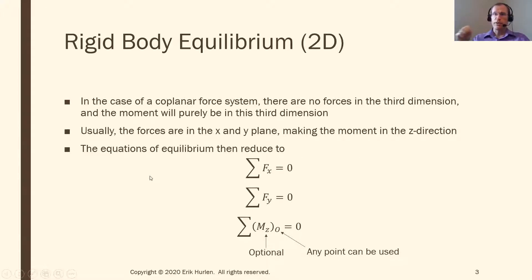Today we're going to stay in two dimensions, just the XY directions. In two dimensions, there are no forces in the Z direction, so we don't need to worry about that. As we discussed with moments, if I have a moment in just the XY plane, then there is really only one moment and that's around the Z axis. So to get to equilibrium: no movement left and right means all forces in the X direction add up to zero, no movement up and down means all forces in the Y direction equal zero, and no rotation means the sum of all moments in the Z direction adds up to zero as well.